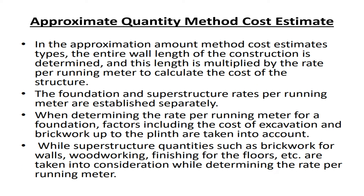Approximate quantity method cost estimate: In the approximate quantity method, the entire wall length of the construction is determined, and this length is multiplied by the rate per running meter to calculate the cost of the structure. The foundation and superstructure rates per running meter are established separately. When determining the rate per running meter for a foundation, factors including the cost of excavation and brickwork up to the plinth are taken into account. While superstructure quantities such as brickwork for walls, woodworking, and finishing for the floors are taken into consideration when determining the rate per running meter.